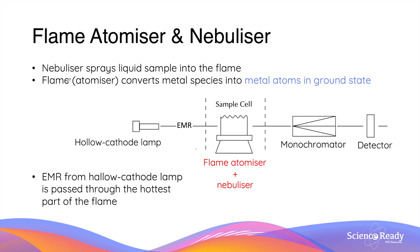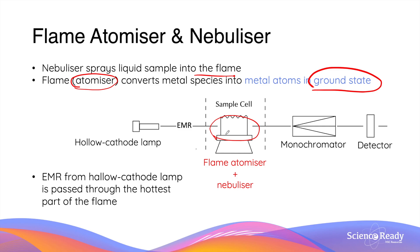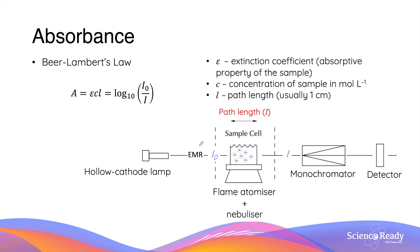A nebuliser sprays the liquid sample, which contains the metal we want to measure, into the flame. In AAS, the flame is responsible for converting metal species in the sample into metal atoms in the ground state — that is, metal atoms whose electrons are in their normal orbits, not yet excited. This is why the flame is referred to as the atomiser. The EMR produced from the hollow cathode lamp is passed through the hottest part of the flame, where metal atoms in the ground state are present. Since the EMR produced by the hollow cathode lamp is characteristic of the metal being analysed, the metal atoms in the flame will absorb this EMR to reach an excited state. Due to this absorption, the amount of EMR before the flame is always going to be higher than what comes out of the flame.